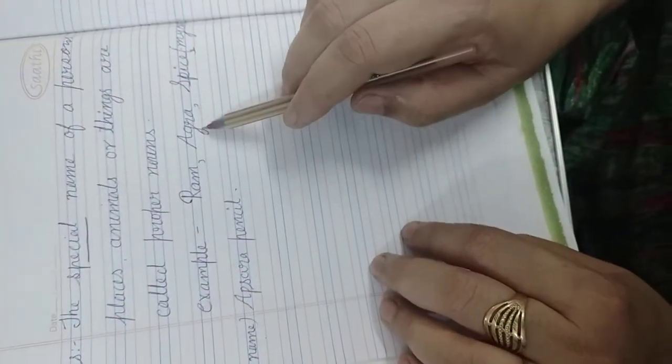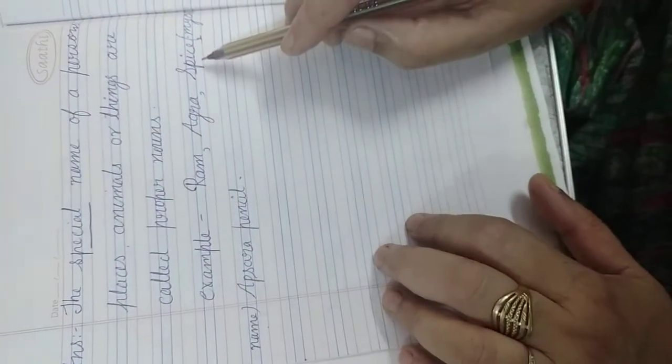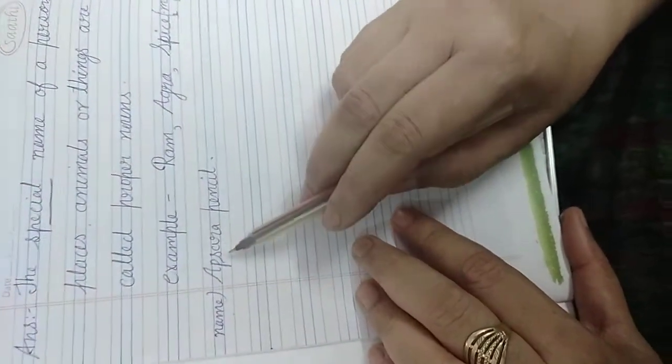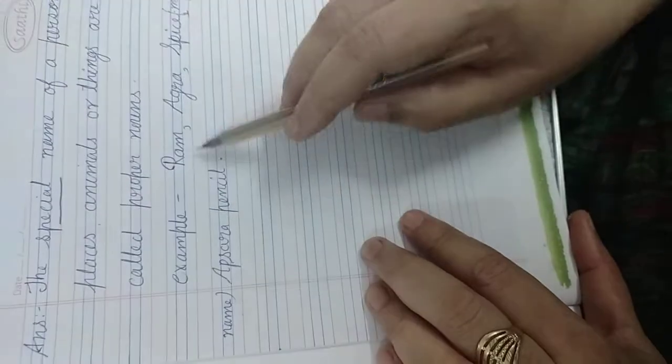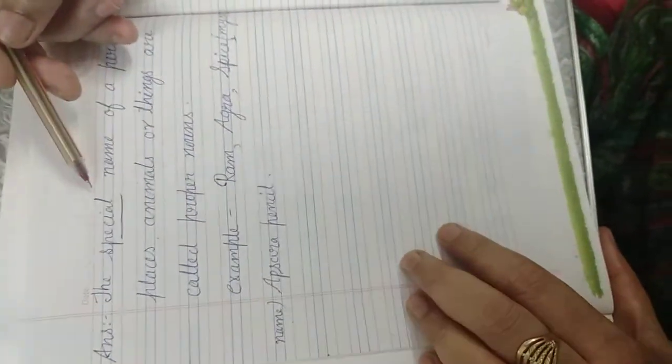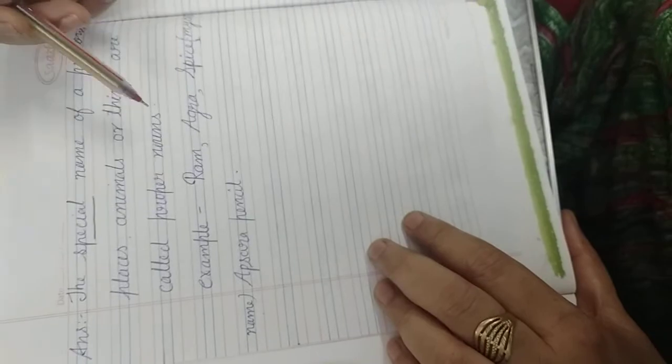For example, suppose the boy's name is Ram, Agra city, Spice my cat's name. These special names are called proper nouns.